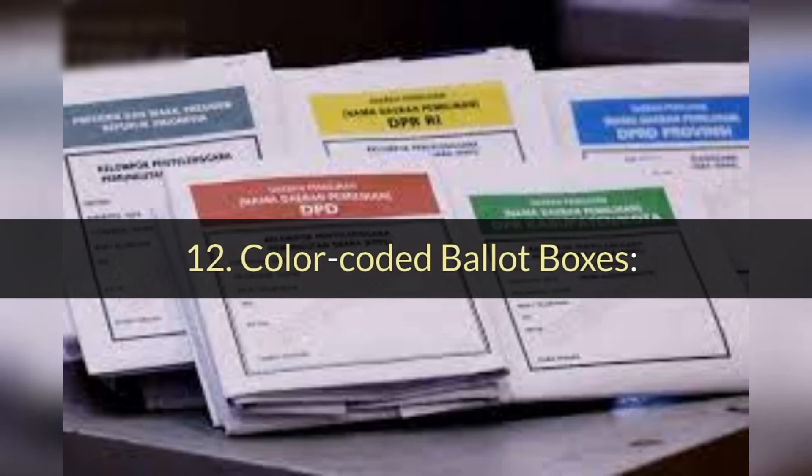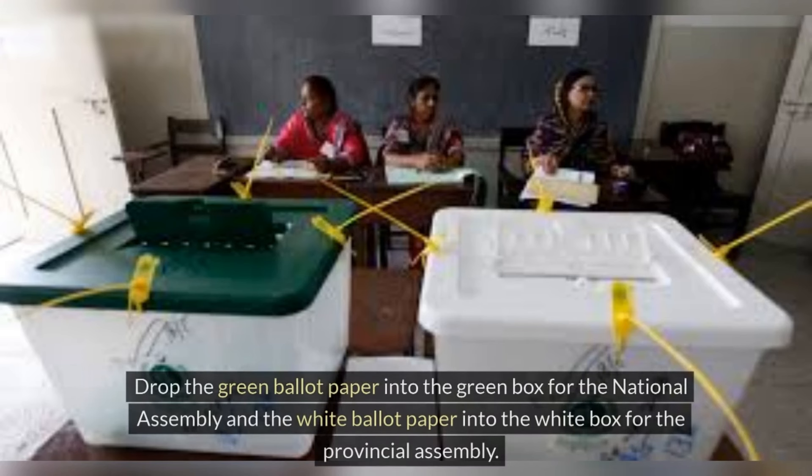Step 12: Color-Coded Ballot Boxes. Drop the green ballot paper into the green box for the National Assembly and the white ballot paper into the white box for the Provincial Assembly.